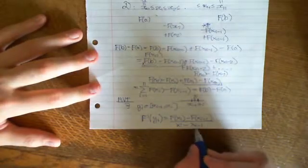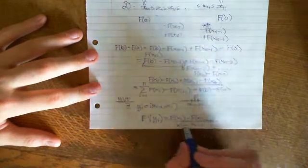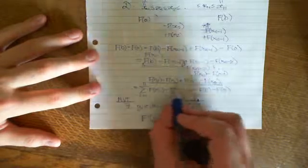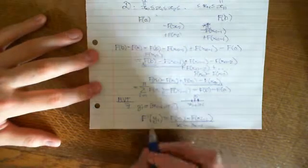F(xᵢ) minus F(xᵢ₋₁) all over xᵢ minus xᵢ₋₁. So why is that so clever? Because in the next video, what we're going to do is take this bit, multiply this up here, and replace this in this great big series with this times this...